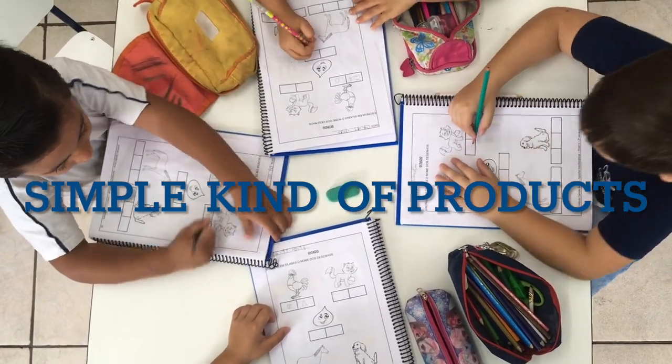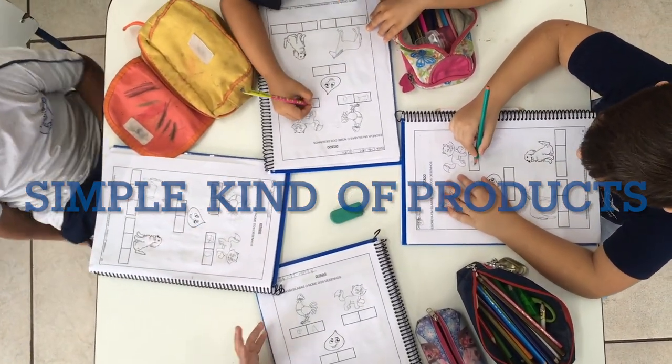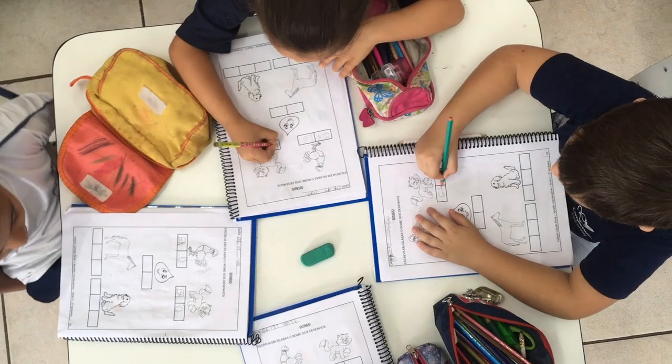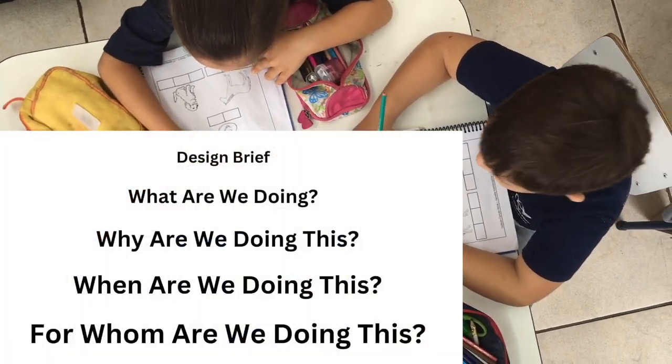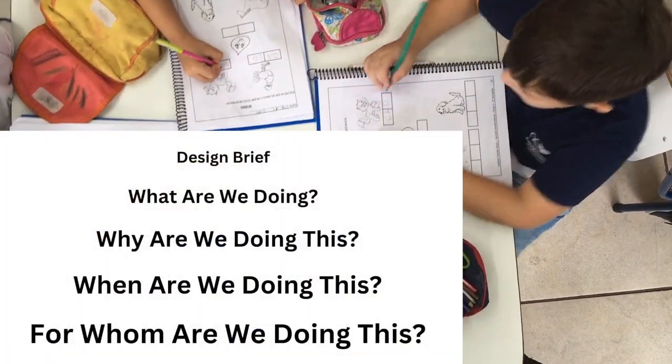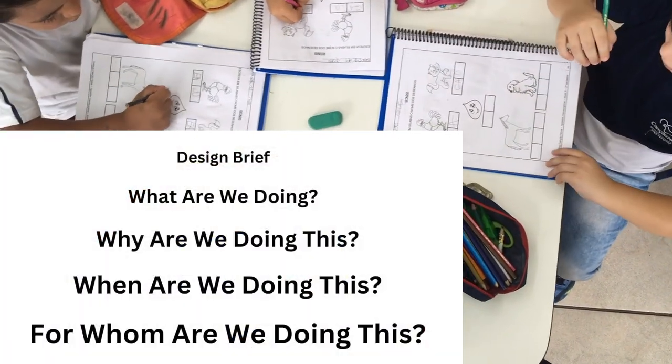Then second, we need to check similar kinds of products for better ideas. Then the last one, we need to write a proper brief, a design brief, like what we are doing, why we are doing, how we are doing, and when we are doing.